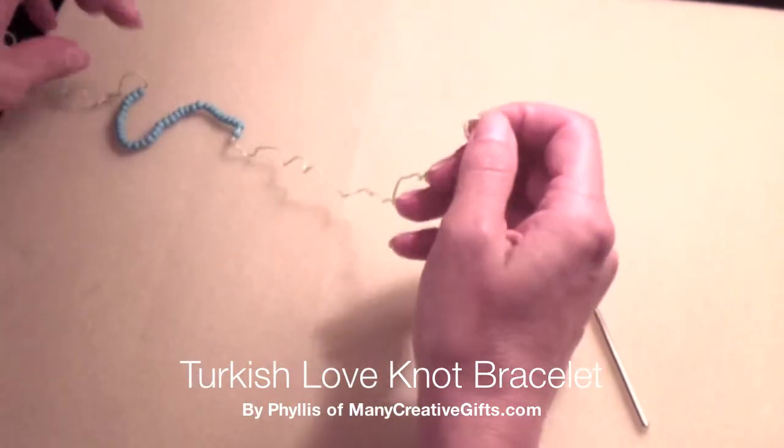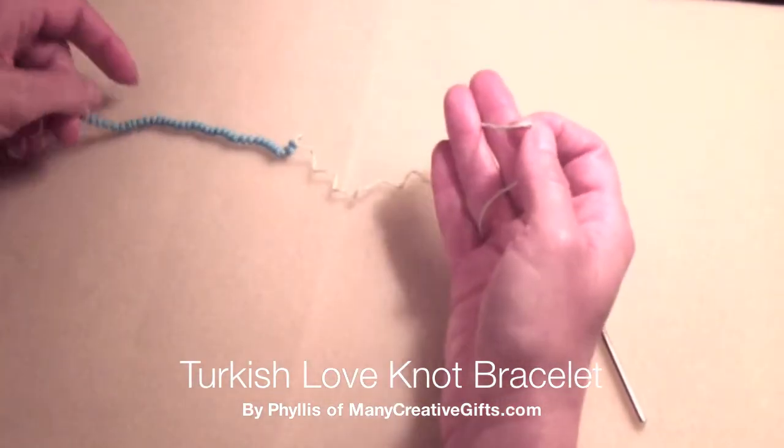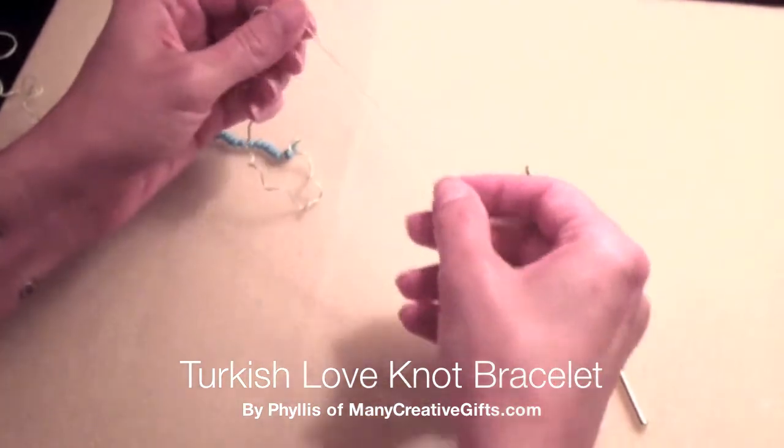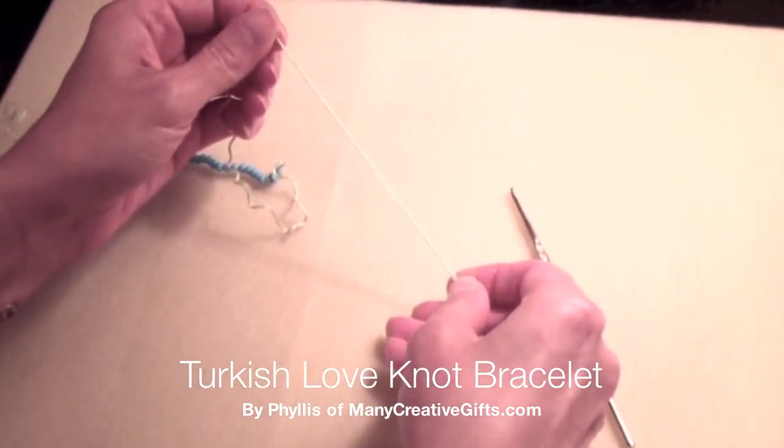String about 50 or 60 beads onto the embroidery thread and leave yourself about a 3 to 5 inch tail.